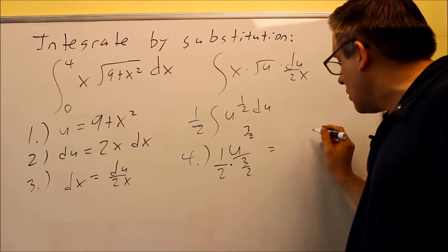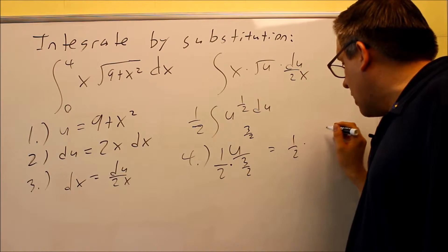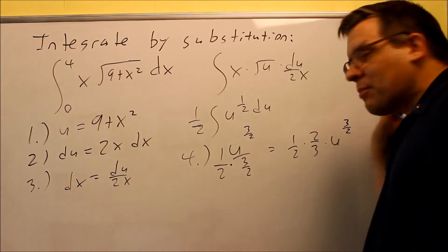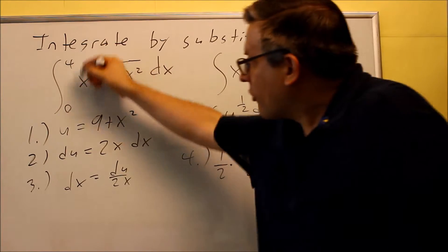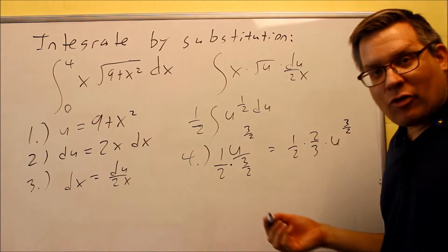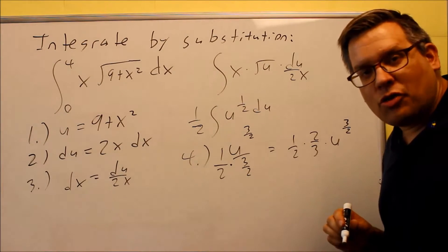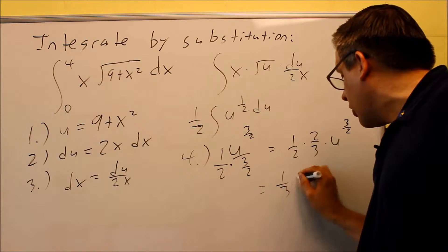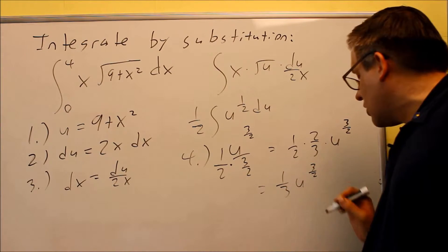If you simplify this, we have one half times two thirds times u to three halves. Notice I'm not putting a plus c here, because whenever I have numbers that are given, I'm not going to have a plus c as the answer, I'll get an actual numerical answer. The twos are going to cancel out, and I get a one third u to the three halves.